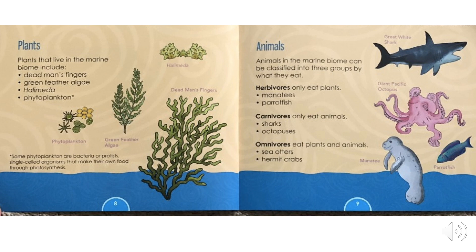Animals. Animals in the marine biome can be classified into three groups by what they eat. Herbivores only eat plants — examples are manatees and parrotfish. Carnivores only eat animals — examples are sharks and octopuses. Omnivores eat plants and animals — examples are sea otters and hermit crabs.